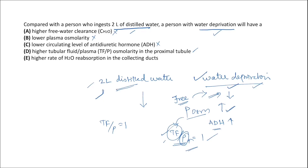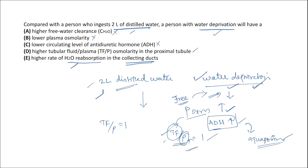The final choice is a higher rate of water reabsorption in the collecting duct. That is correct. Water deprivation leads to increased antidiuretic hormone, which induces the expression of aquaporins, facilitating water reabsorption. Higher rate of water reabsorption in the collecting duct is the correct choice.